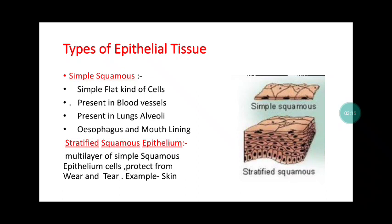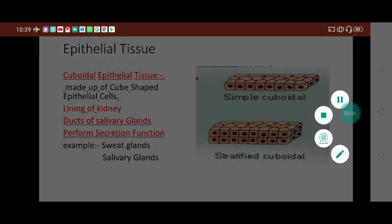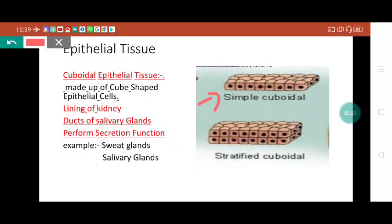So we can understand the role of stratified squamous epithelial cells. Next one is called cuboidal epithelial tissue. If you observe the diagram, in simple cuboidal, the cells have cube-shaped surfaces with a single nucleus present. When these cube-shaped cells combine together, they give rise to simple cuboidal epithelium tissue. They are present in the lining of the kidney and ducts of salivary glands. One very important function: when the upper surface of these cells moves inward, they sometimes create a cavity.